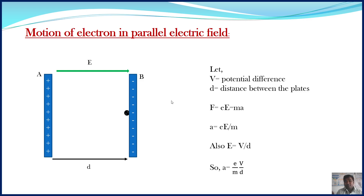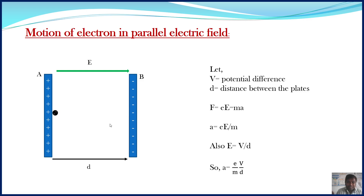Now let us calculate the distance traveled by an electron in time t, the velocity achieved by an electron in time t, transit time, and impact velocity — we are going to talk about these particular parameters. If we release this electron, it will accelerate towards the positive plate due to the force exerted by the electric field, and the electron will follow a straight line path in the parallel electric field.